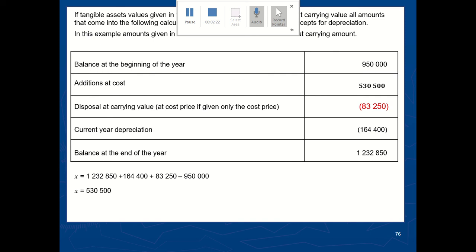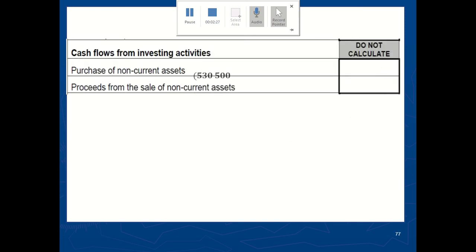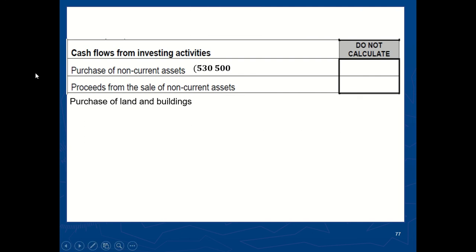What do we do with that five hundred and thirty thousand five hundred? You take that straight to your cash flow statement. So basically, you will have that five hundred and thirty thousand five hundred as purchase of non-current asset. That is only for the purchase of equipment. But that is not the only non-current asset we purchased.